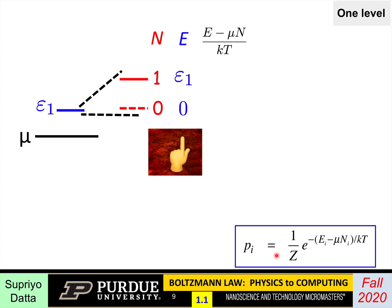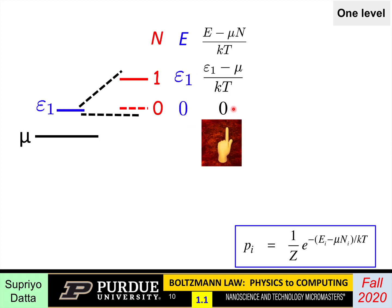Let's take the simplest system — one with just one level. In the one-electron space there's just one state; in state space there are two to the power one, which is two: a zero state and a one state. To write down the Boltzmann law I need the energy and the number of electrons for each. The number of electrons in the one-state is one, in the zero-state is zero. The energy for the zero-state is zero; for the one-state it's epsilon_1. So (epsilon_1 minus mu) over kT is the relevant exponent.